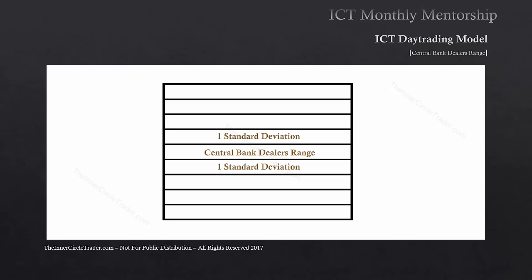One standard deviation above and below would be the same range added to the high of the central bank dealers range. One standard deviation is the same pip range as the central bank dealers range total range. We subtract that range from the central bank dealers range low, giving us one standard deviation above and one below. That range is then added to the high of the first standard deviation and subtracted from the low of the first standard deviation below, giving us the second standard deviation. This replicates up to standard deviations one, two, three, and four.